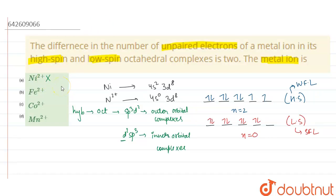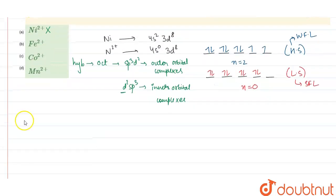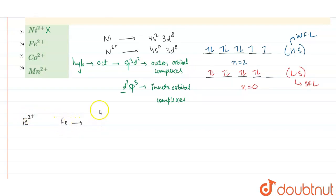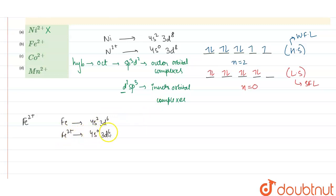Since we cannot distinguish high spin and low spin complexes for nickel 2 plus, there is no point comparing unpaired electrons. Let's move to the next ion: Fe 2 plus. The electronic configuration of Fe is 4s2 3d6, and for Fe 2 plus it becomes 4s0 3d6. We have 5 d-orbitals.